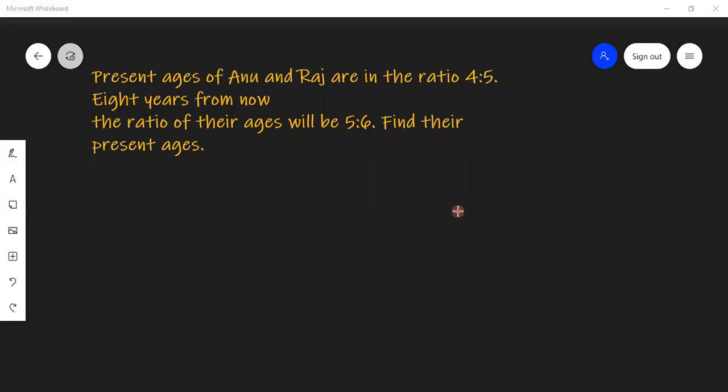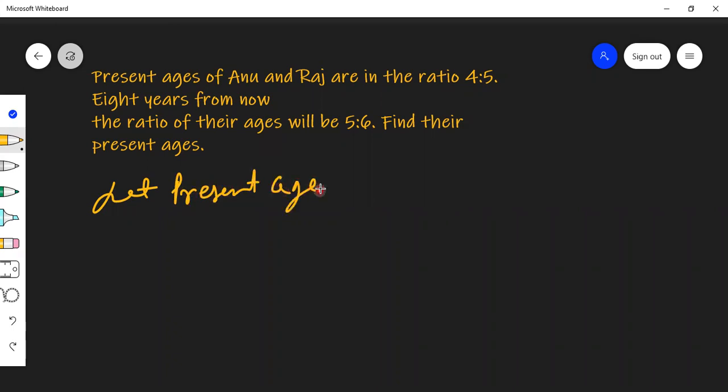When the ages of Anu and Raj are given in 4 is to 5, we can assume let present ages, they are talking about present ages of Anu. Present age of Anu is 4x. Since this is in ratio, we write 4x. They're talking about years, so 4x years.